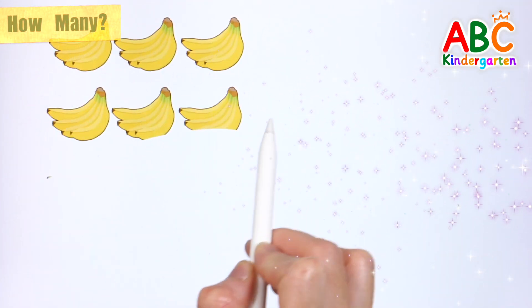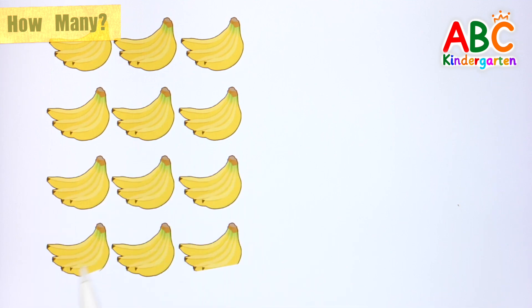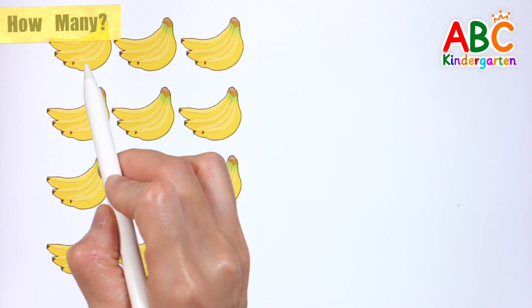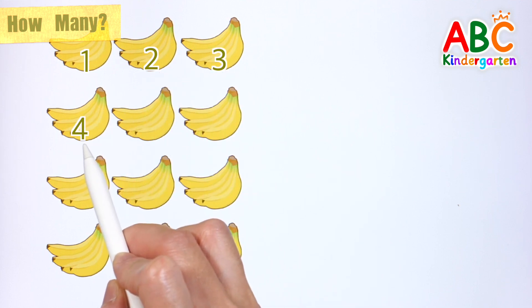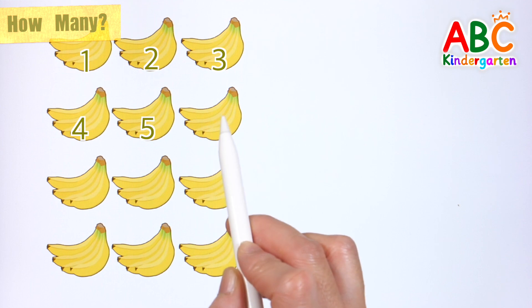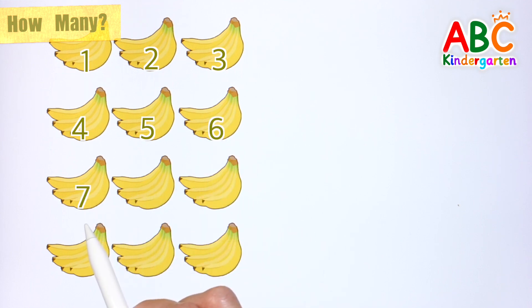Let's count how many bananas there are in total. 1, 2, 3, 4, 5, 6, 7, 8, 9, 10, 11, 12. 12 bananas.